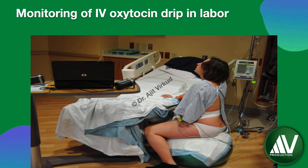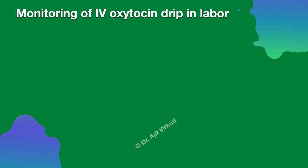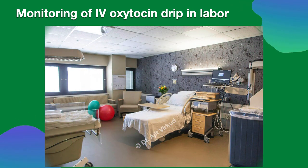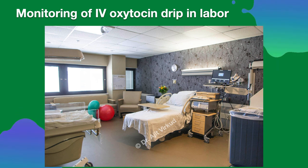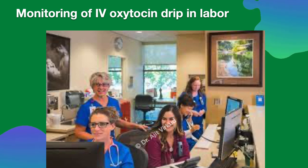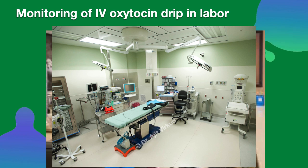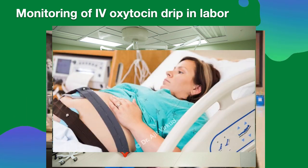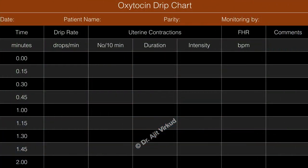A question often asked in examinations: how do you monitor a patient on an oxytocin drip in the labor ward? Oxytocin infusion is a potentially dangerous drug and requires an adequately equipped delivery area with trained nursing staff, resuscitation equipment, and the availability of operating staff and facilities for caesarean section within 30 minutes. Continuous fetal heart rate monitoring — preferably electronic — is required. The patient must be under constant supervision and monitored every 15 to 30 minutes for uterine contractions, fetal heart rate, and any complications. A record should be maintained on a chart.